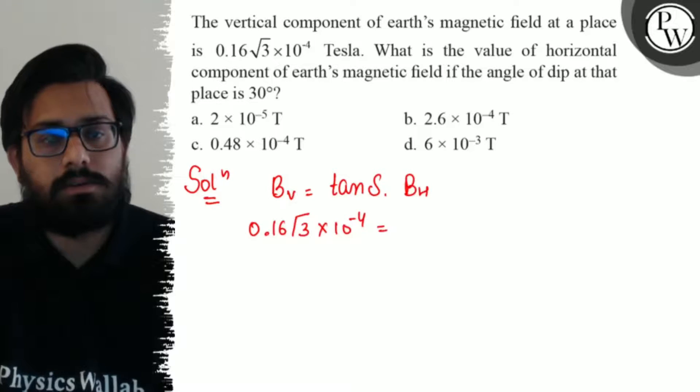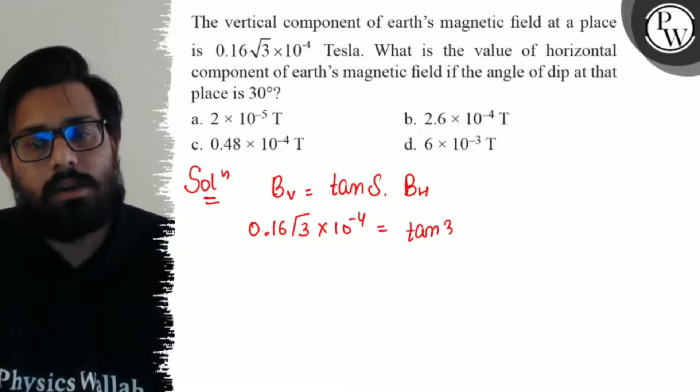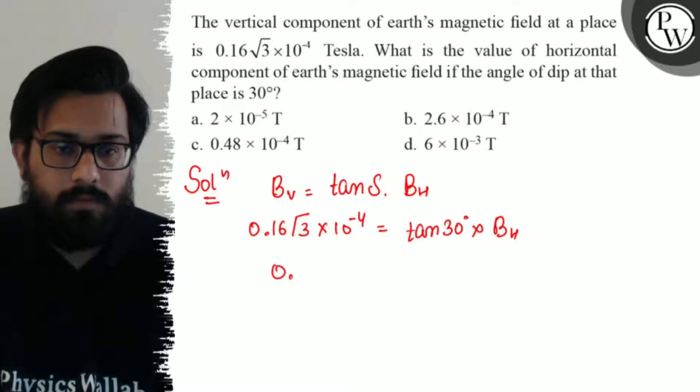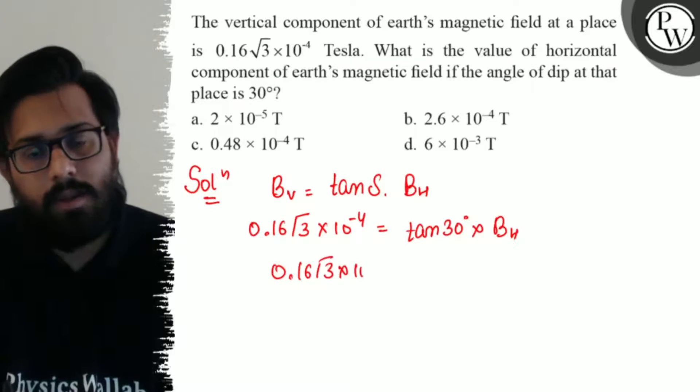This equals tan of angle of dip, which is 30 degrees, times Bh. So 0.16√3 × 10^-4.